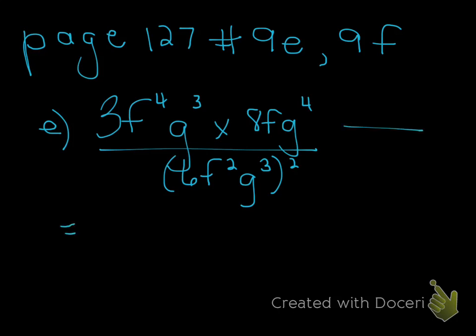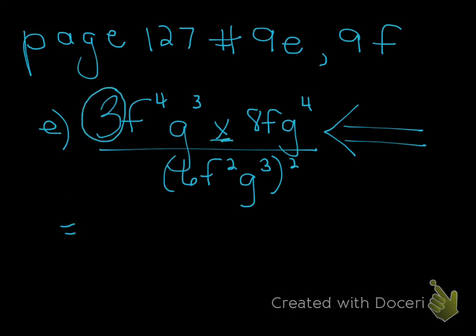When you look at the numerator, you're going to take a look at the top, and you're going to see that there's a multiplication sign right in the middle. So that means we're going to have to multiply whatever expression is on here. We're going to start with the numbers — there's a 3 over here, and you're going to have to multiply by 8. So we write 3 times 8.